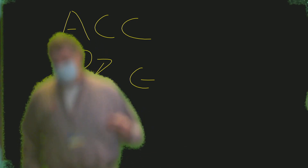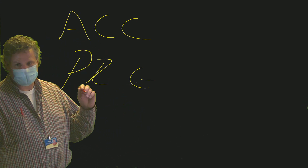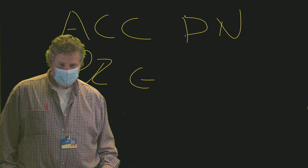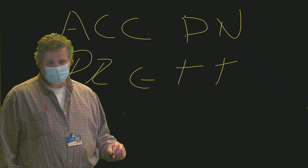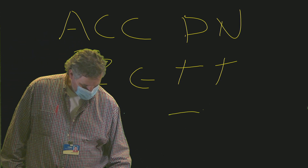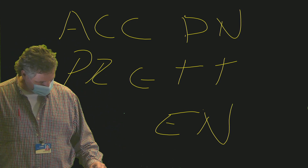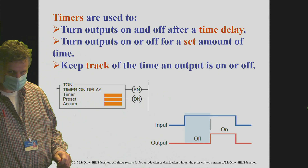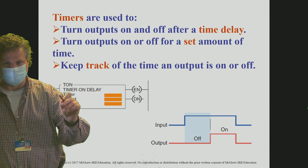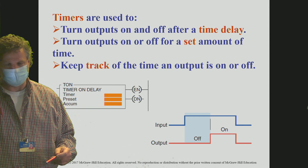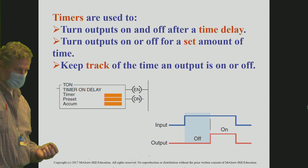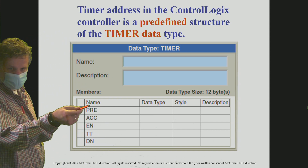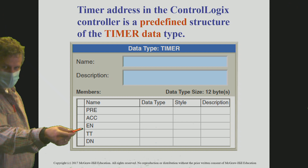We have three bits — one control word — associated with the timer, called the done bit (DN), the timer timing bit (TT), and the enable (EN). When looking at that diagram you can see they illustrate the EN and DN. As soon as the input to this timer comes on, the EN turns on immediately. The done bit turns on once the preset and the accumulated values are equal. Here is the layout of the tags: the preset word, the accumulated word, and then the EN, TT, and done bits.